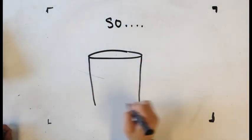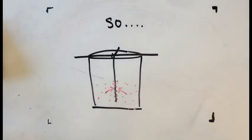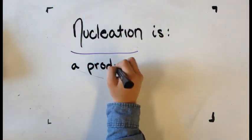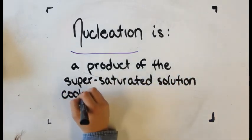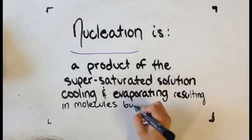The string is pre-coated in sugar in order to provide a platform for recrystallization. This process is called nucleation. Nucleation is a product of the super saturated solution cooling and evaporating, thus resulting in molecules bumping into each other and also sticking together.